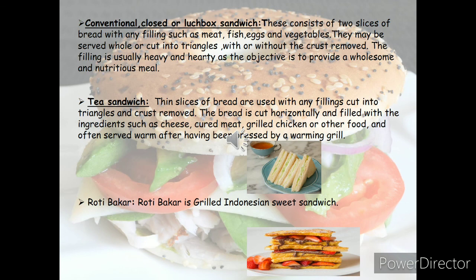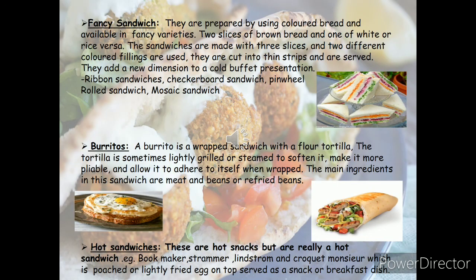Conventional closed or lunchbox sandwiches consist of two slices of bread with any filling — meat, vegetables, or egg. They may be served whole or cut into neat triangles, with or without the crust removed, and are an ideal item for the lunch box, carried by school children and office workers. Tea sandwiches are also fancy — the crust is removed, the bread is cut horizontally and filled with cheese, meat, or other food items, and often served warm along with tea. Roti bakar is a grilled Indonesian sweet sandwich in which different types of fruits are used.